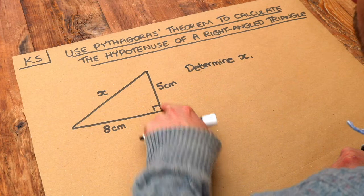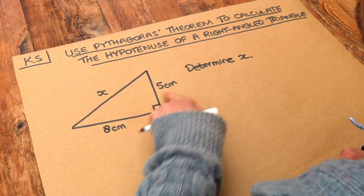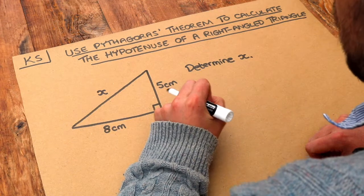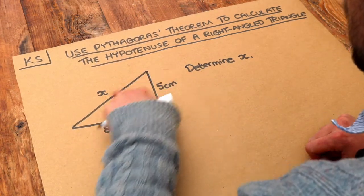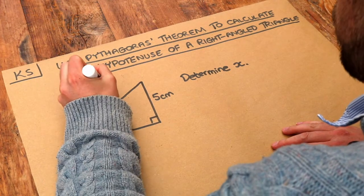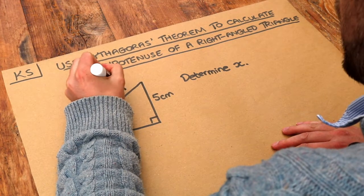So we've got this right angle triangle here and we know two of the lengths and we want to find the third length. In this particular video we want to find the length which is the longest side of the right angle triangle and this longest side is known as the hypotenuse.